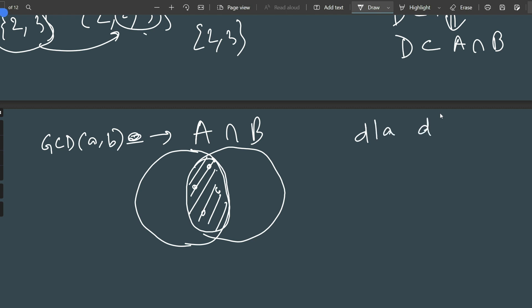In fact, the GCD of A and B corresponds exactly to the intersection of the multi-sets A and B. It is the largest number that divides both A and B. This gives us a nice result: if D is a common divisor of A and B, then D must be a divisor of the GCD. Why? Because any common divisor is a subset of the intersection.